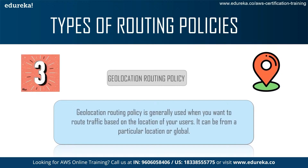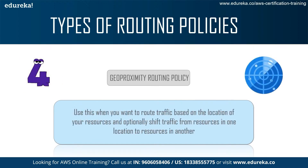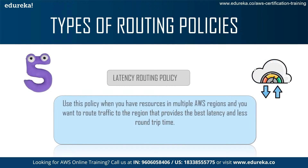The Geolocation Routing Policy is used when you want to route traffic based on the location of your users, either from a particular location or globally. The Geoproximity Routing Policy is used when you want to route traffic based on the location of resources, and you can optionally shift traffic from one resource to another, or from resources in one location to resources in another location.